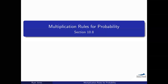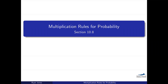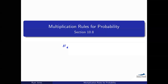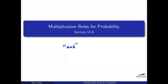Let's go ahead and continue with a lecture, this time on multiplication rules for probability. We saw last time when we talked about addition rules for probability that we use the word OR in the problems. Here we're going to be using the word AND, so we'll want to know what's the probability of two events both occurring, as opposed to just one or the other.